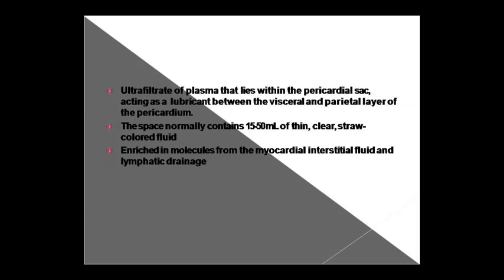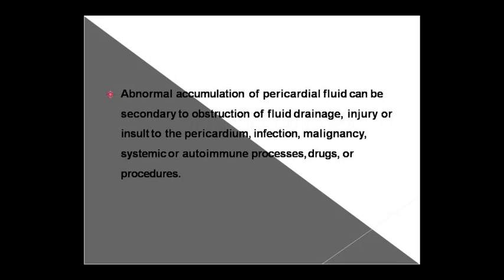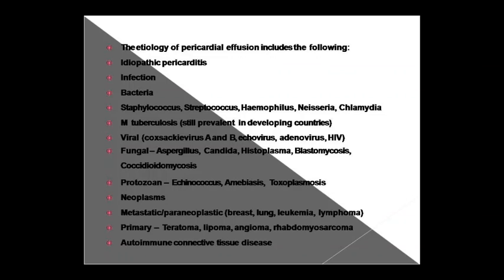This fluid is enriched with many molecules coming from myocardial interstitial fluid and lymphatic drainage. If pericardial fluid abnormally accumulates due to obstruction of drainage, injury, infection, malignancy, systemic or autoimmune processes, or drugs, then excess pericardial effusion can occur. Regarding the etiology of pericardial effusion, most commonly it is idiopathic — idiopathic pericarditis where inflammation of the pericardium occurs for no clearly understood reason — or it can be due to infection such as bacteria.